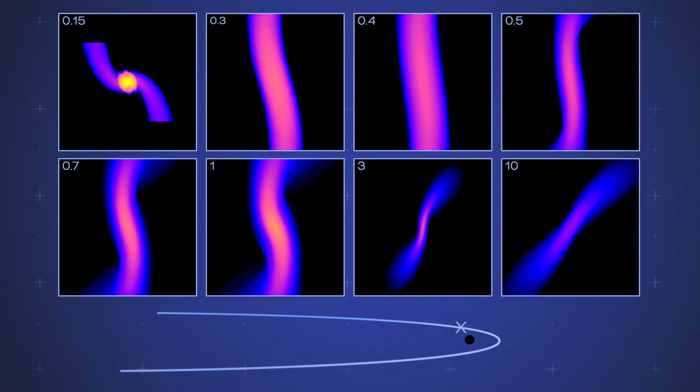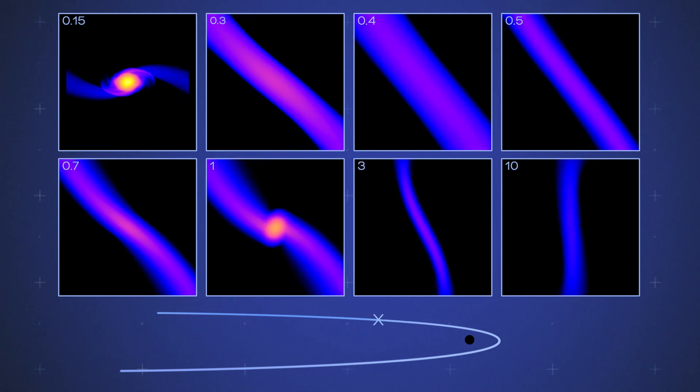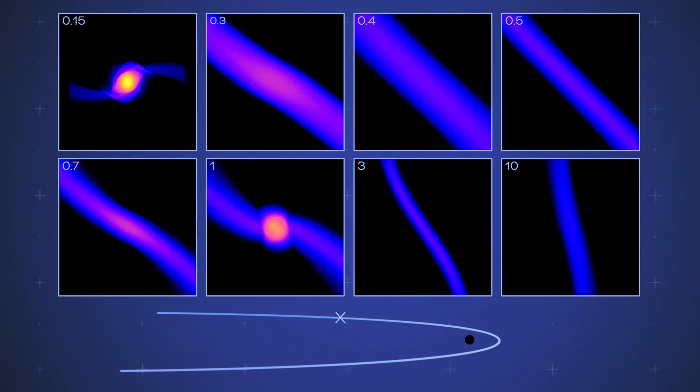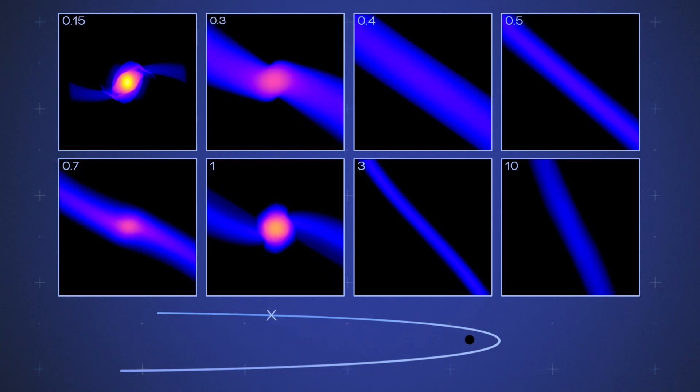In some cases, the stars are fully pulled apart. In others, they're only partially disrupted. As these stars move farther from the black hole, their own gravity pulls them back together.